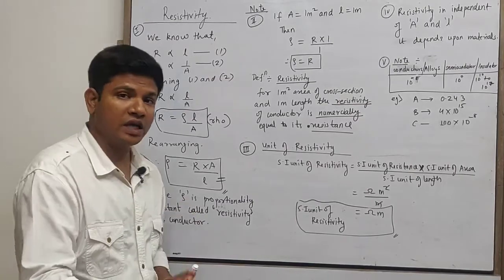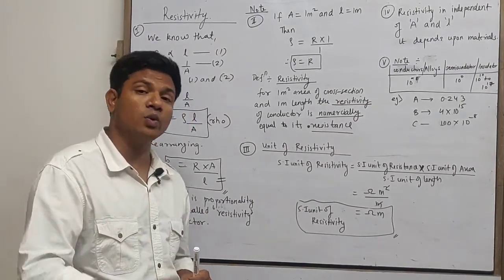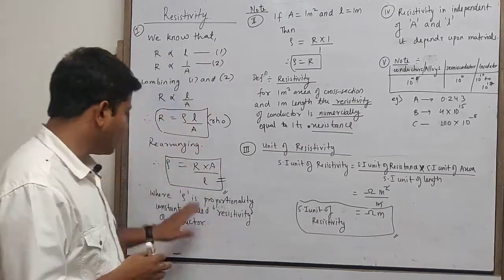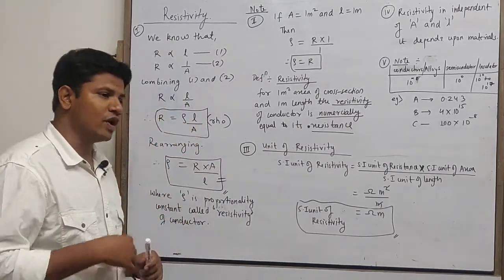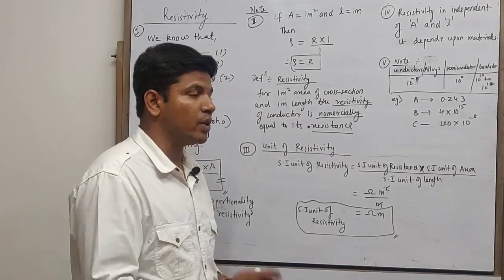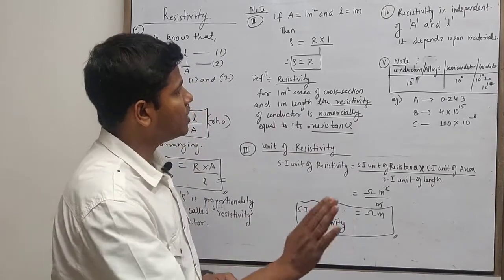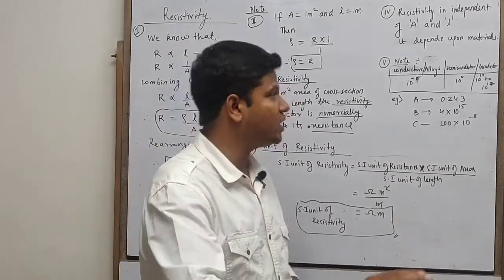Resistivity is a material constant. It will only depend upon the material. Although from the formula we can see if the value changes it has to change, but remember that resistivity is a material constant. It is independent of area of cross section and length of the conductor.